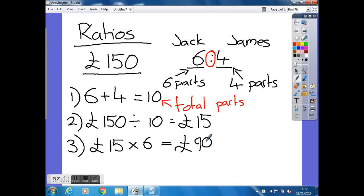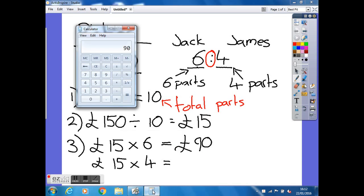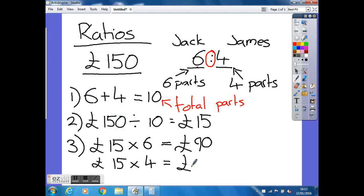Now we can go along and do the same thing for James, except this time we're going to be multiplying it by four because James gets four parts of it. Again, go back to your calculator if it's needed. Fifteen multiplied by your four is equal to 60. So there, you've worked out how much money each of these people get.